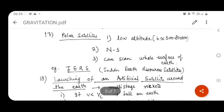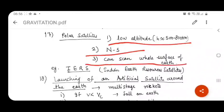The next type of satellites are the polar satellites, which are known as the low altitude satellites. They go from north to south direction and they can scan whole surface of the Earth. For example, Indian Earth resources satellites are called as the polar satellites.